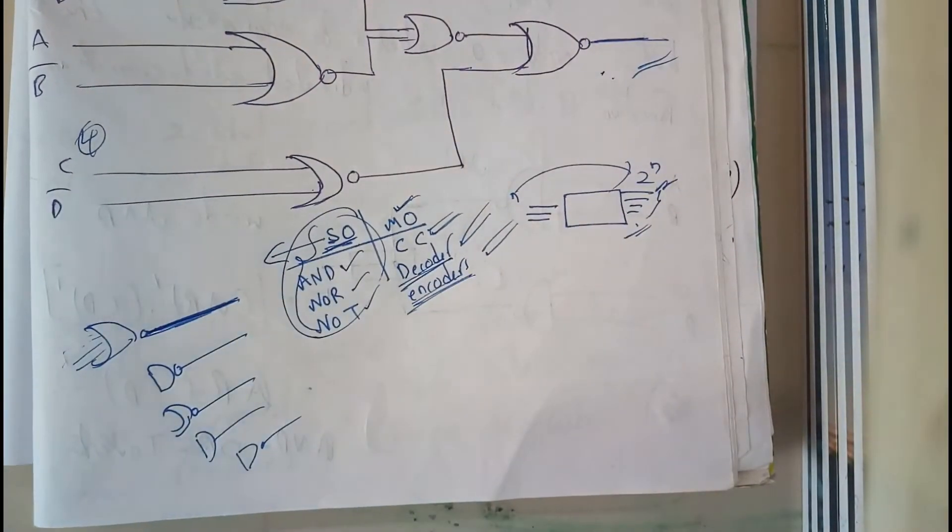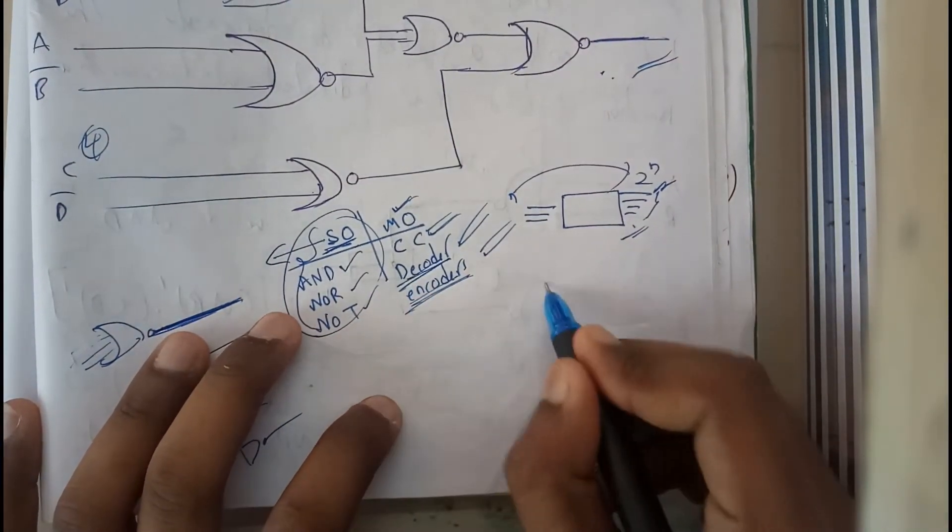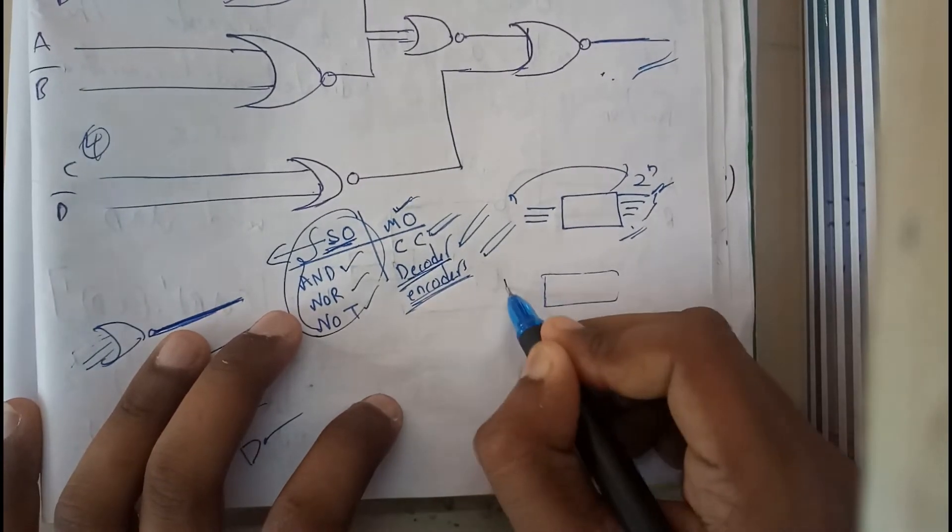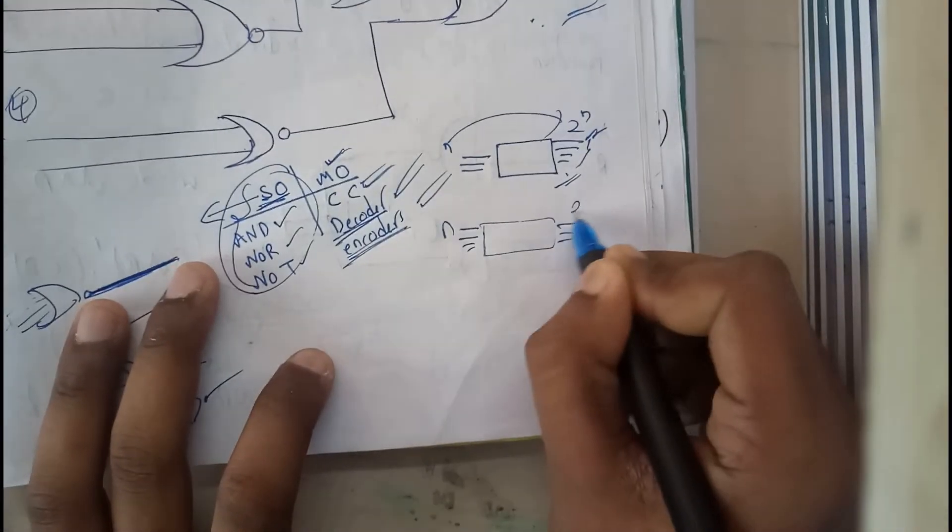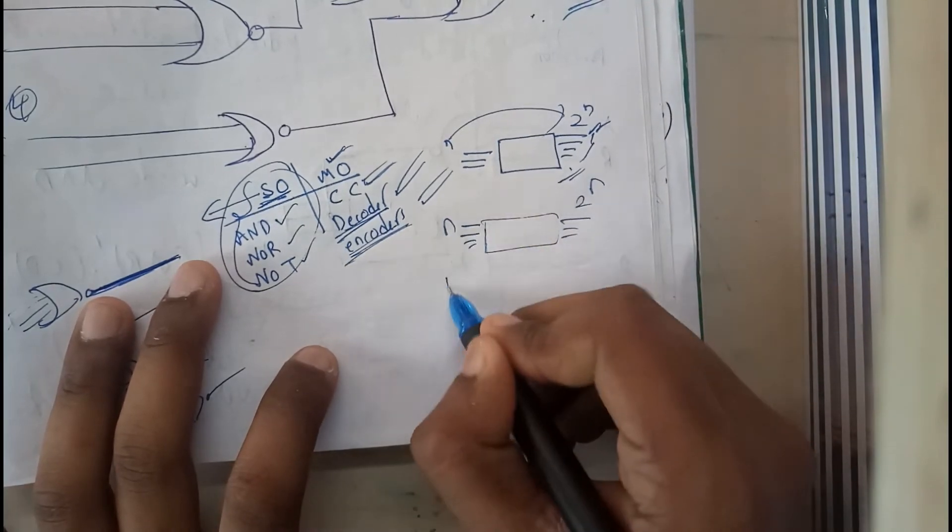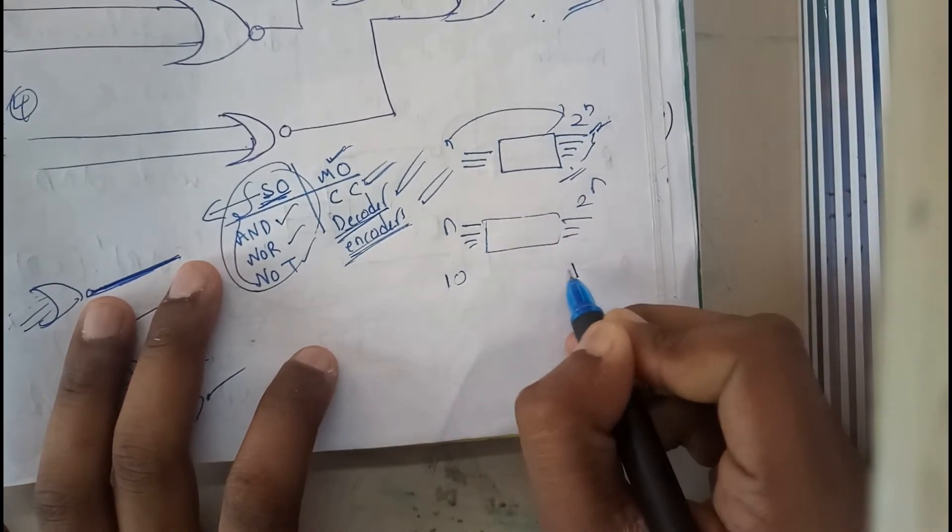Let's assume a decoder. Basically, it will be having N inputs and it's going to give 2^N outputs. If we give 10 inputs, it's going to give 2^10 outputs.